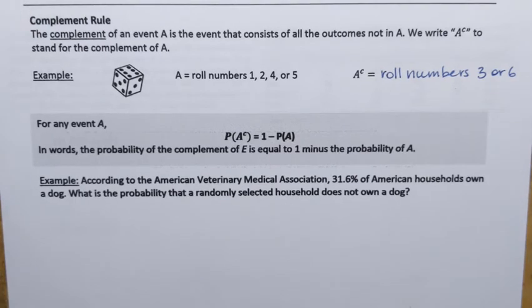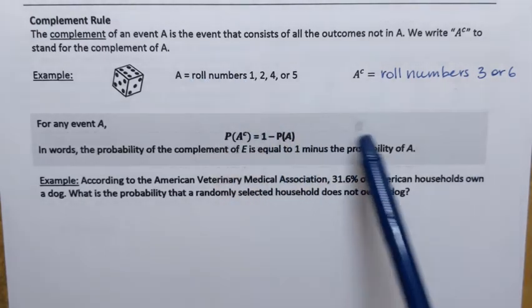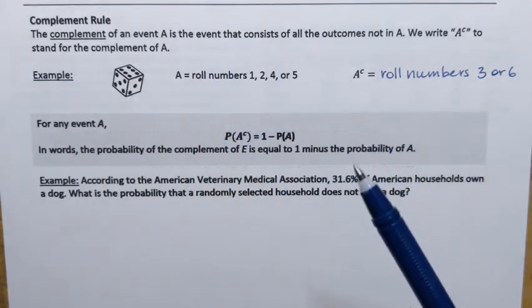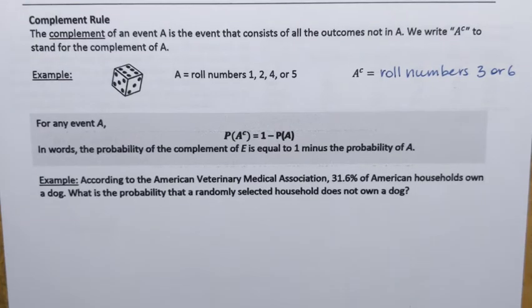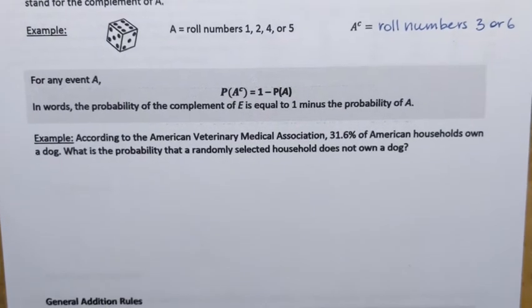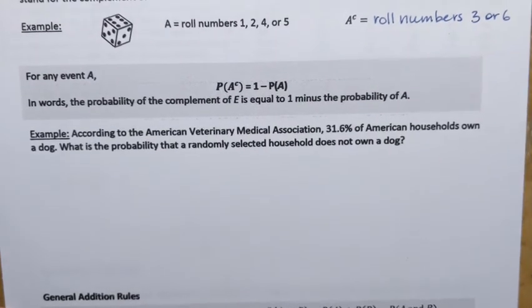Knowing the fact that all together they make all possible outcomes and probability of all possible outcomes is 1, here's the complement rule that we're going to use in the next example.